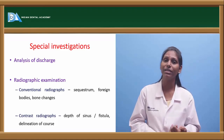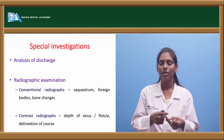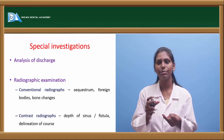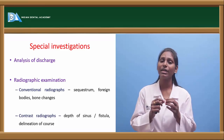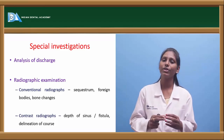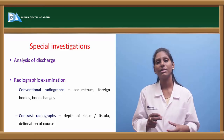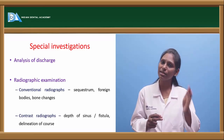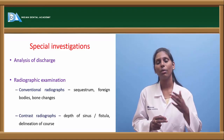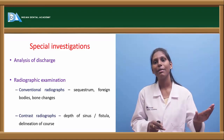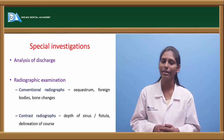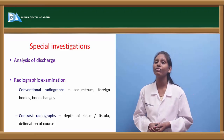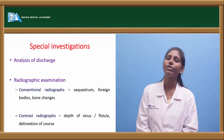For example, in actinomycosis there is a particular type of discharge from the sinus opening which contains sulfur granules — this is pathognomonic for actinomycosis. Analysis of discharge helps us know what kind of infection it is. If we treat the infection or drain the abscess, the sinus or fistula can heal — however, true fistulas rarely heal.